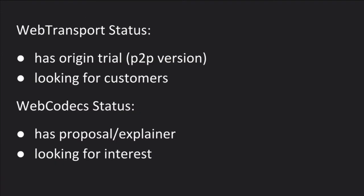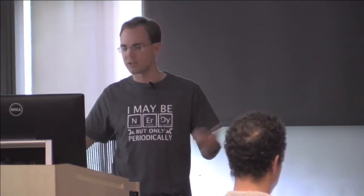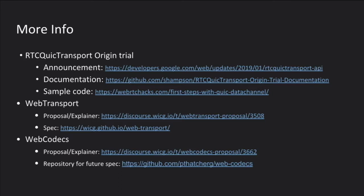The status: for WebTransport, we have for Chromium and Edge Preview an origin trial of the peer-to-peer version, and we are looking for customers to properly prioritize and justify work on the client-server version. Similarly, for WebCodecs it's a little less far along — there is a proposal and explainer, and we're looking for interest from people to know how to prioritize implementing it. Here are links for the origin trial, announcement, documentation, and sample code; for WebTransport there's the proposal, explainer, and spec; and for WebCodecs there's a proposal, explainer, and a repository for a future spec — we have not yet published a spec there.